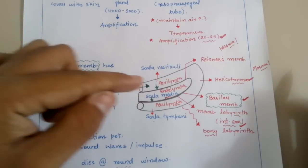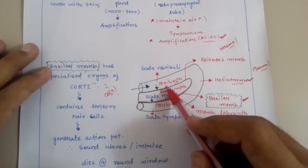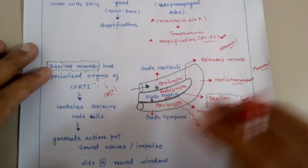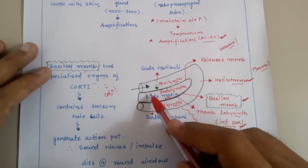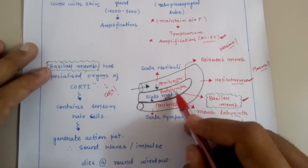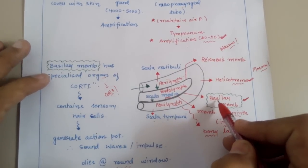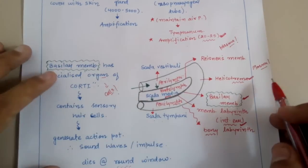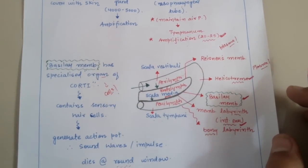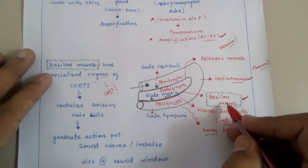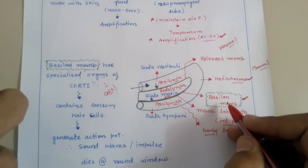The sound reaches the internal ear via the oval window and then strikes the perilymph — the fluid-filled space. The sound strikes the fluid and the fluid starts vibrating. That vibration stimulates Reissner's membrane, which then stimulates the endolymph of scala media. It then strikes the basilar membrane, and as we know, the basilar membrane has specialized cells known as the organ of Corti, which has sensory cells that can generate action potential or impulse. So the impulse is generated at the basilar membrane — present between scala media and scala tympani — by the organ of Corti.